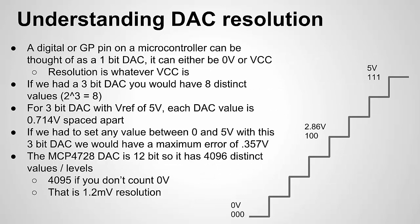Let's talk about resolution in more detail. A good reference is the digital or GPIO pin on a microcontroller — whether you're using an Arduino, Raspberry Pi, or Texas Instruments part. A digital pin can output VCC — let's assume five volts — or low, which is zero volts. So you can think of a digital GPIO pin as a one-bit DAC: it has two states, either five volts or zero volts, giving a resolution of five volts.